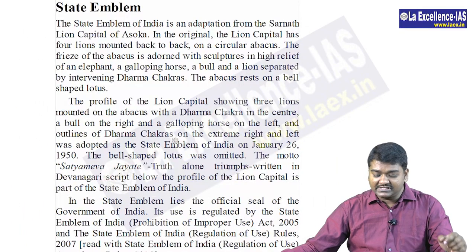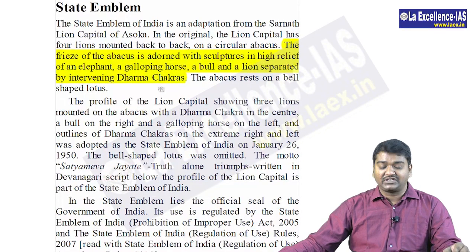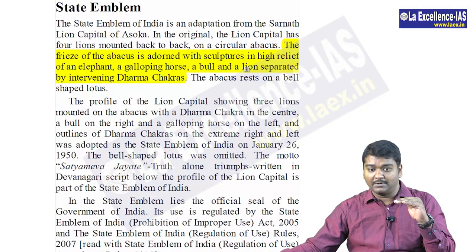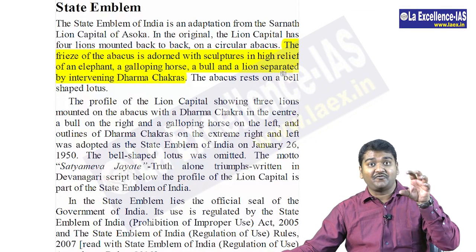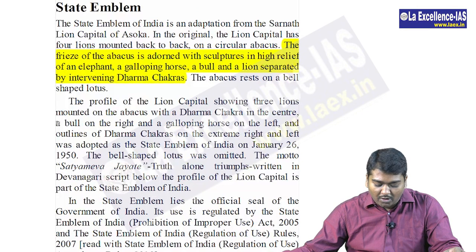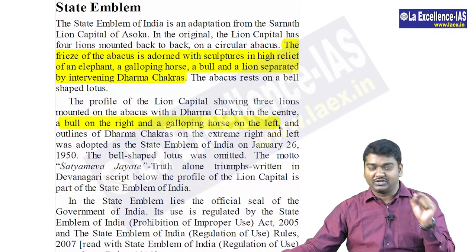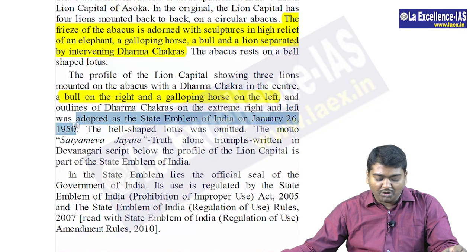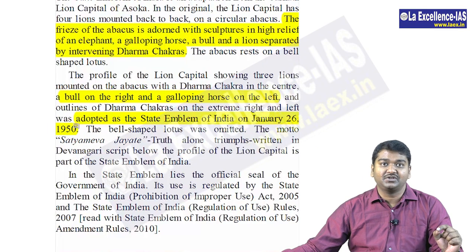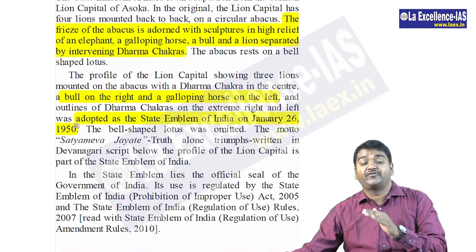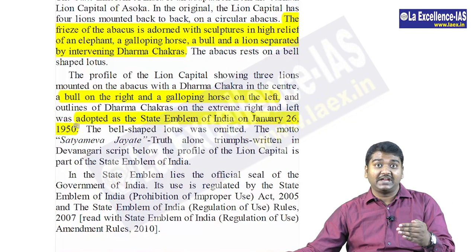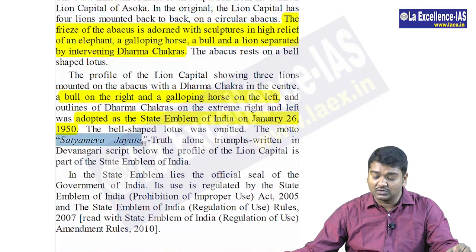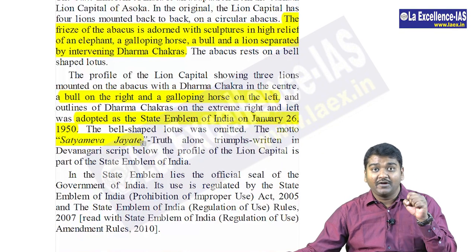When looking at the state emblem, the original Sarnath capital has four lions, an elephant, a galloping horse, a bull, and a lion below the emblem. In what we have adopted, we can see three lions, a bull on the right, and a galloping horse on the left. The state emblem was adopted on 26th January 1950. They may ask you to arrange in increasing order of their dates of adoption — national flag (July 22nd 1947), state emblem (January 26th 1950), etc. 'Satyameva Jayate' is from the Mundaka Upanishad — this was also asked in the exam before.